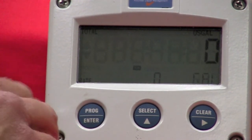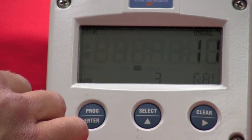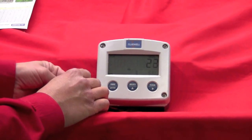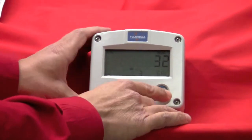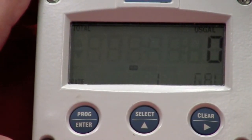There you go. Now in this case, I can just simulate a flow by pushing the button. You can see my totalizer counting. You can see the flow rate on the bottom lower right-hand corner there. And again, to reset the unit, clear, clear, and you'll reset your totalizer back to zero.